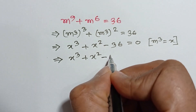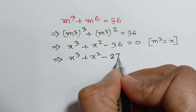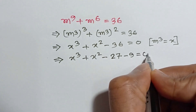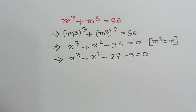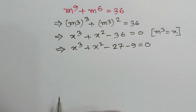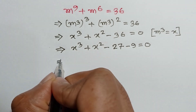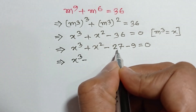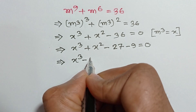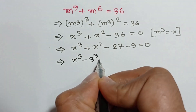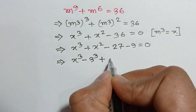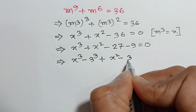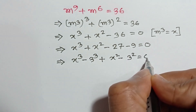So 36 can be broken as 27 plus 9, giving x cubed minus 27 plus x squared minus 9 is equal to 0. That is, x cubed minus 3 cubed plus x squared minus 3 squared is equal to 0.